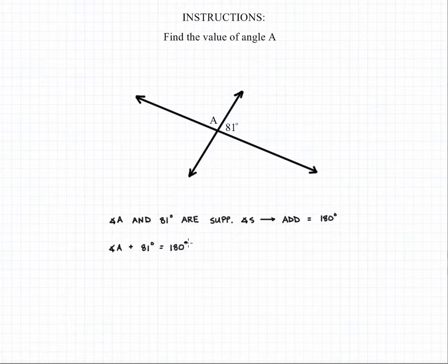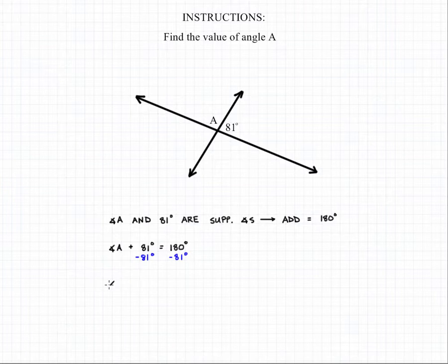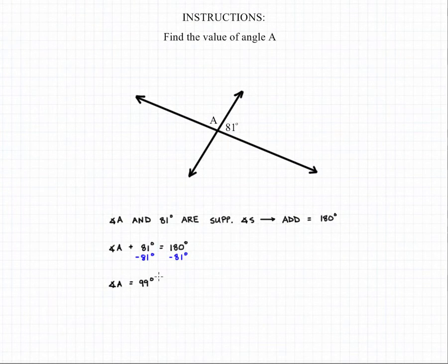So we can solve for the measure of angle A by subtracting 81 degrees from both sides of the equation, which will give us our final answer. The measure of angle A in this question is 99 degrees.